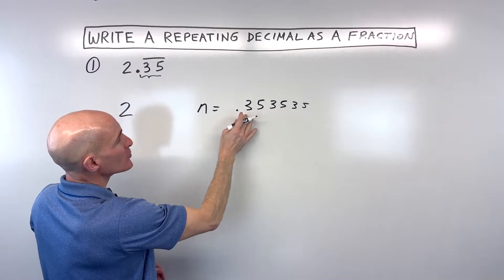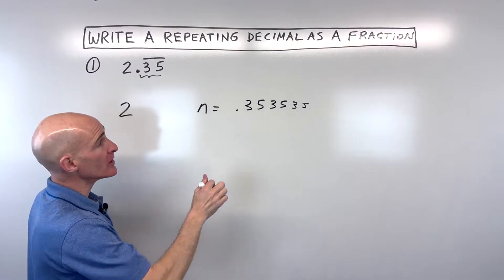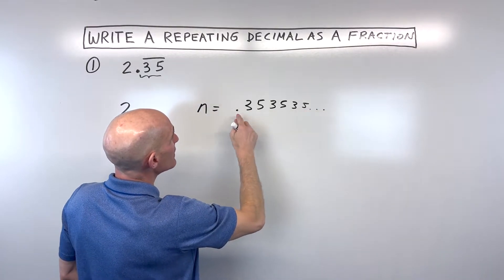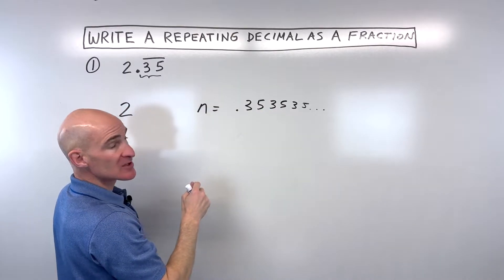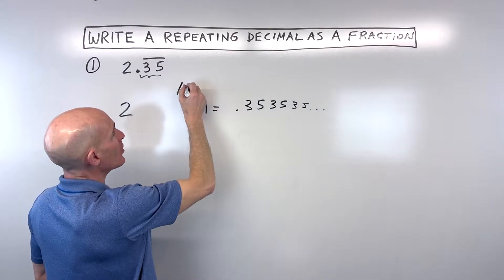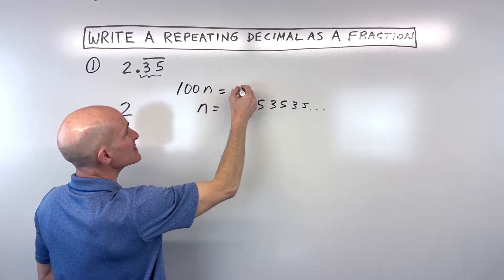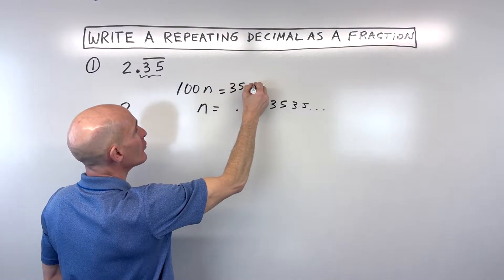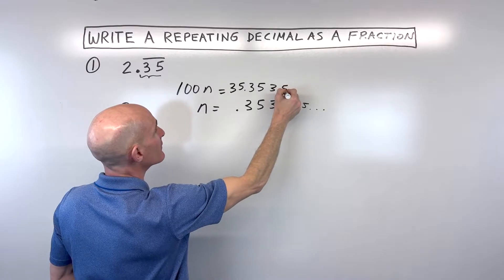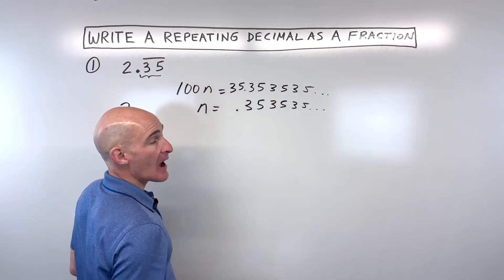But what I'm going to do is I'm going to multiply both sides of this equation by 100. When I multiply by 100, that moves this decimal two places to the right. So we're going to say 100 times our number is equal to 35.353535, on and on, right?